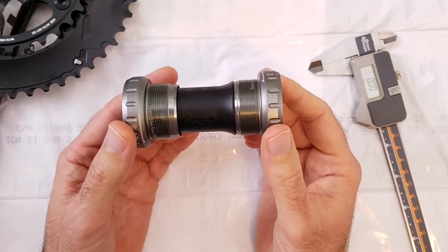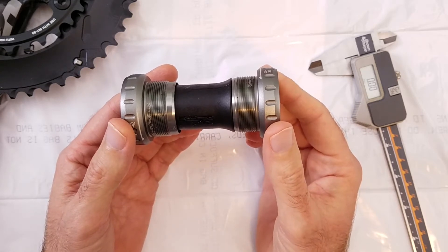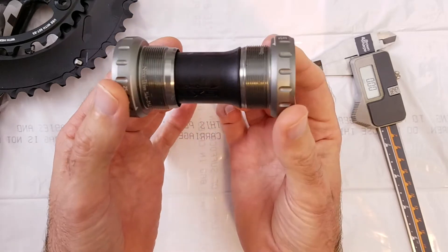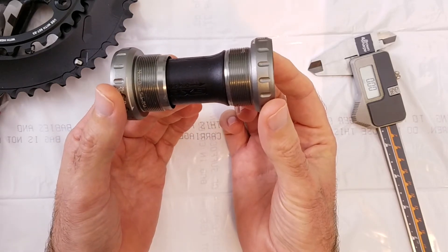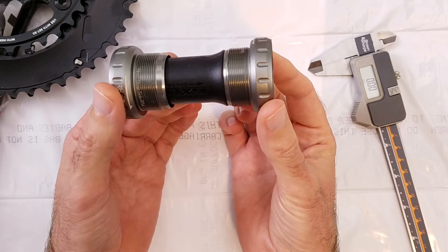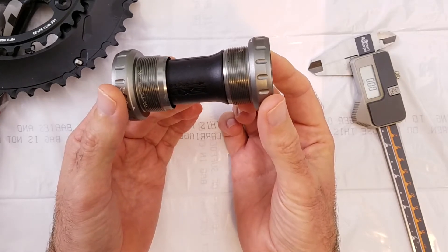The BSA stands for Birmingham Small Arms. They were a group of gunsmiths in England who got together in the 1860s to produce firearms using modern methods at the time. In 1880 they branched out into producing bicycles and later in 1910 they started producing motorcycles.